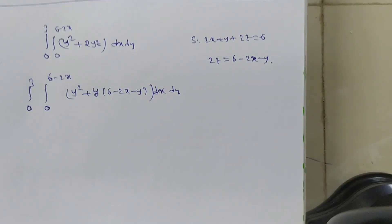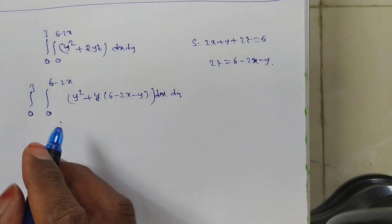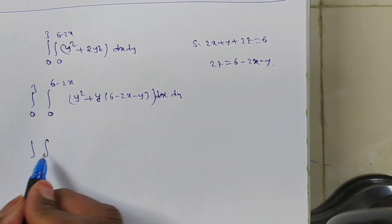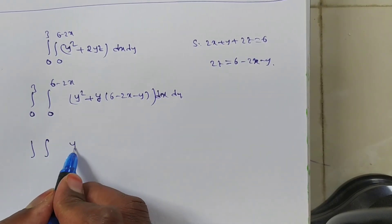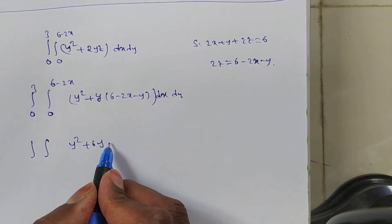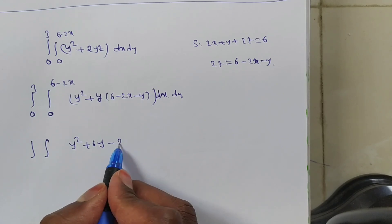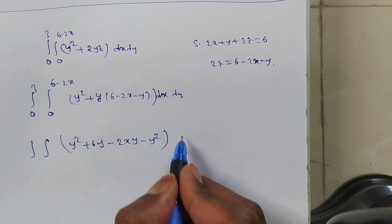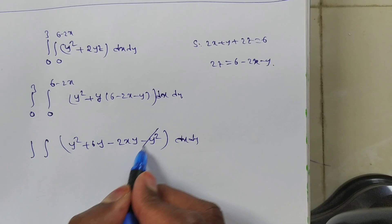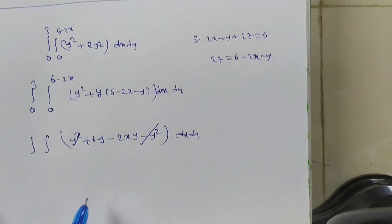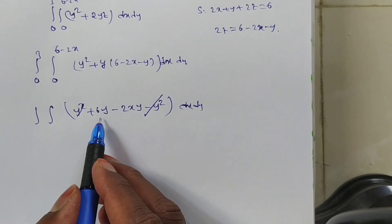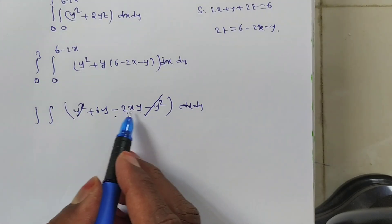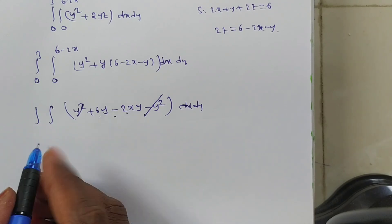Now the integral becomes: ∫₀³ ∫₀^(6−2x) [y² + y·(6 − 2x − y)] dy dx. Expanding: y² + 6y − 2xy − y². The y² terms cancel, leaving ∫₀³ ∫₀^(6−2x) (6y − 2xy) dy dx.